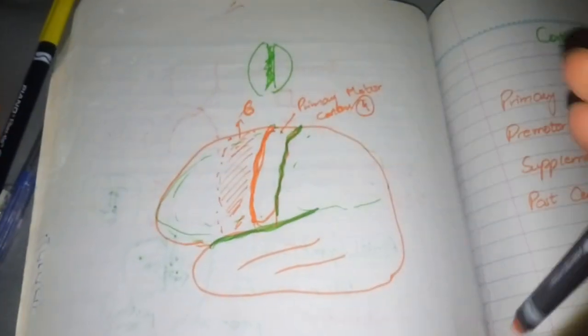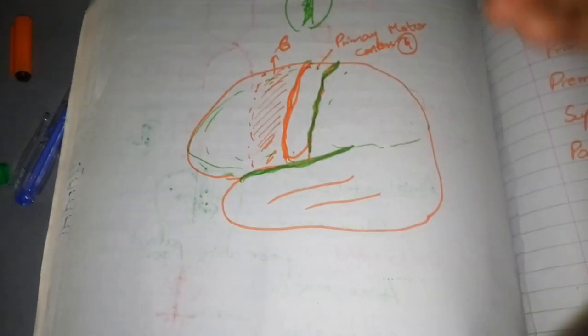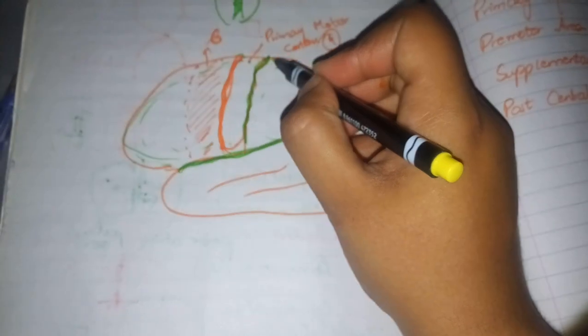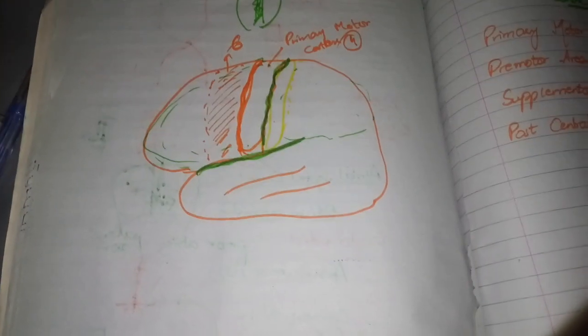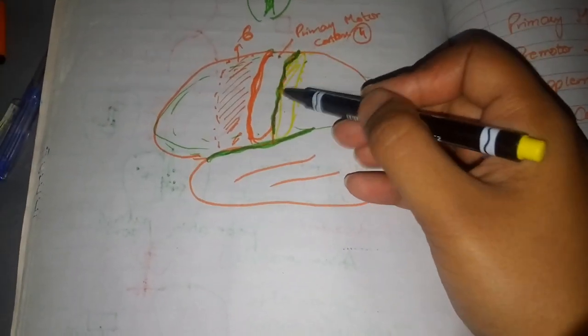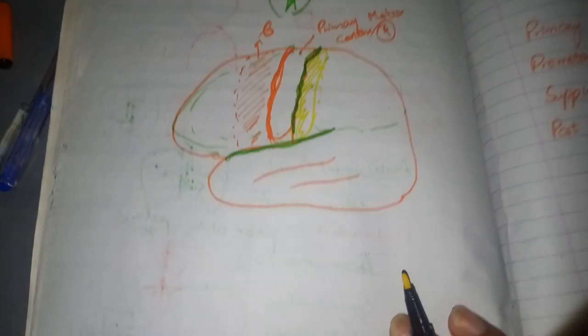Another motor area is known as post-central motor area. This is very important in Guyton. Post-central motor area means that behind your central sulcus in the sensory cortex, there is an area of motor cortex known as post-central motor area, areas 3, 1, and 2.